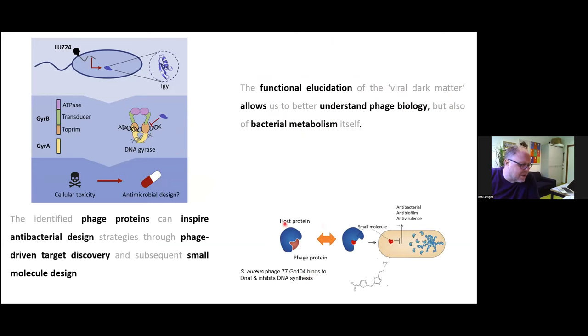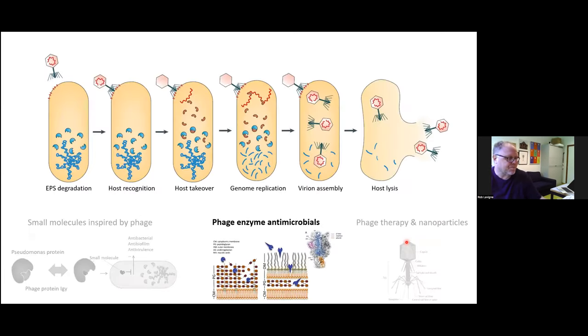In general, for us, studying these unknown genes and these early expressed proteins that are also called the viral dark matter, they help us to understand phage biology, but also the bacterial metabolism. Those phage proteins can serve as an inspiration for phage-driven target discovery. From the biology side, we have our host protein interacting with a phage protein. This identification and selecting the useful ones, in the next step, we create small molecules that have an antibacterial effect. In fact, this has been done in the past for staph aureus, where a gene product binds to another DNA synthesis protein, was actually mimicked by a small antibiotic that could be added to cells and elicit the antibacterial effect.